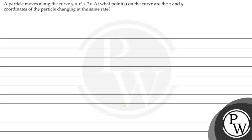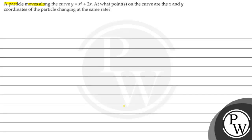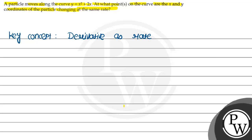Hello, let's first read the question. The question says that a particle moves along a curve y is equal to x squared plus 2x. At what point on the curve are the x and y coordinates of the particle changing at the same rate? The key concept of this question is derivative as rate of change.